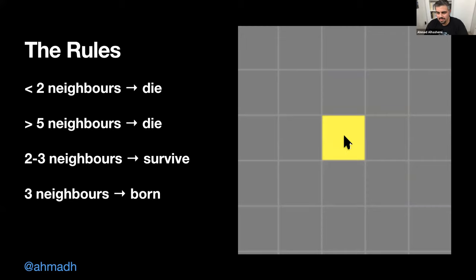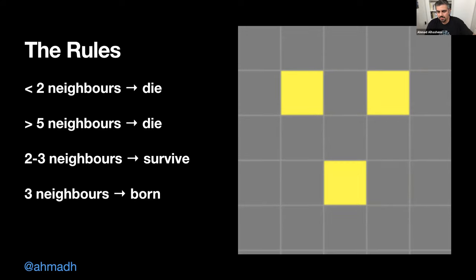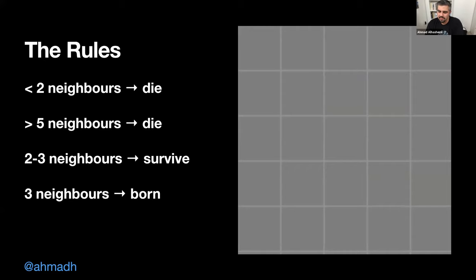If you go to the next cycle, this new cell also dies because it has no neighbors. So this pattern only lasts for two cycles — one cycle produces the intermediate cell, then the next cycle it's completely dead. You have to have some live cells on the grid to continue; otherwise it just stops.